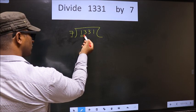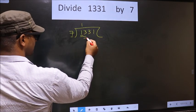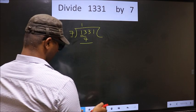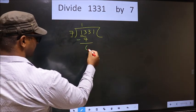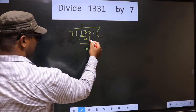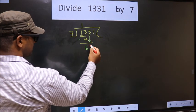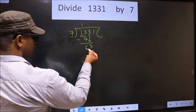A number close to 13 in 7 table is 7 times 1 is 7. Now you subtract. 13 minus 7 is 6. Now you will bring down the beside number that is 3 down.